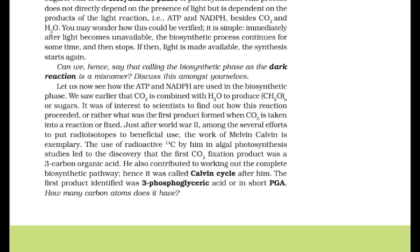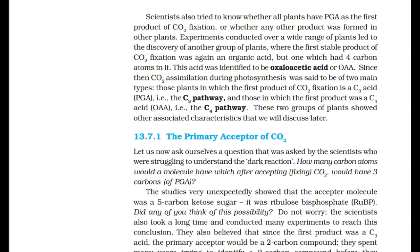Since then, CO2 assimilation during photosynthesis was said to be of two main types: plants in which the first product of CO2 fixation is a C3 acid (PGA) — the C3 pathway — and those in which the first product is a C4 acid (OAA) — the C4 pathway. These two groups of plants showed other associated characteristics.